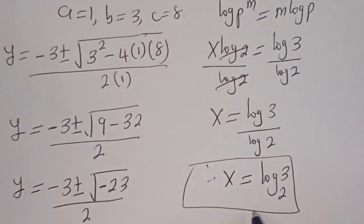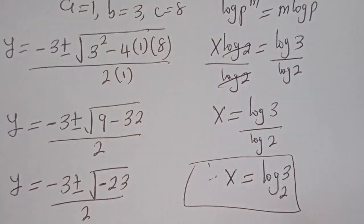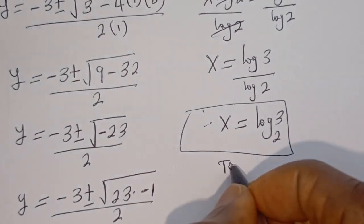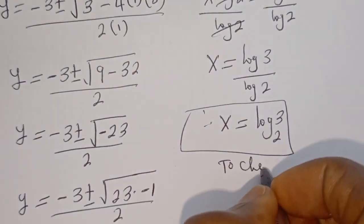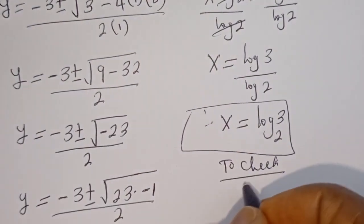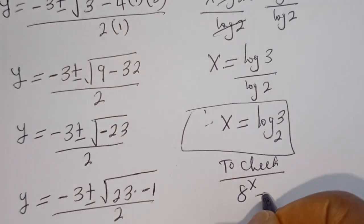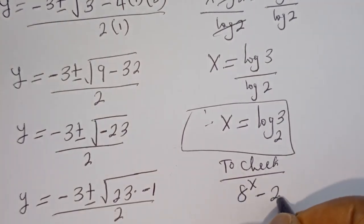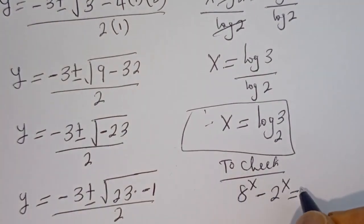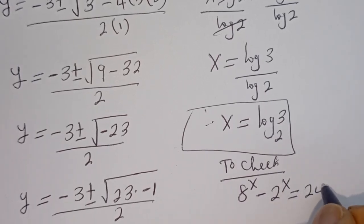We can check to confirm if this answer is right or wrong. To check: we have the given equation, 8 to the power of x minus 2 to the power of x is equal to 24.